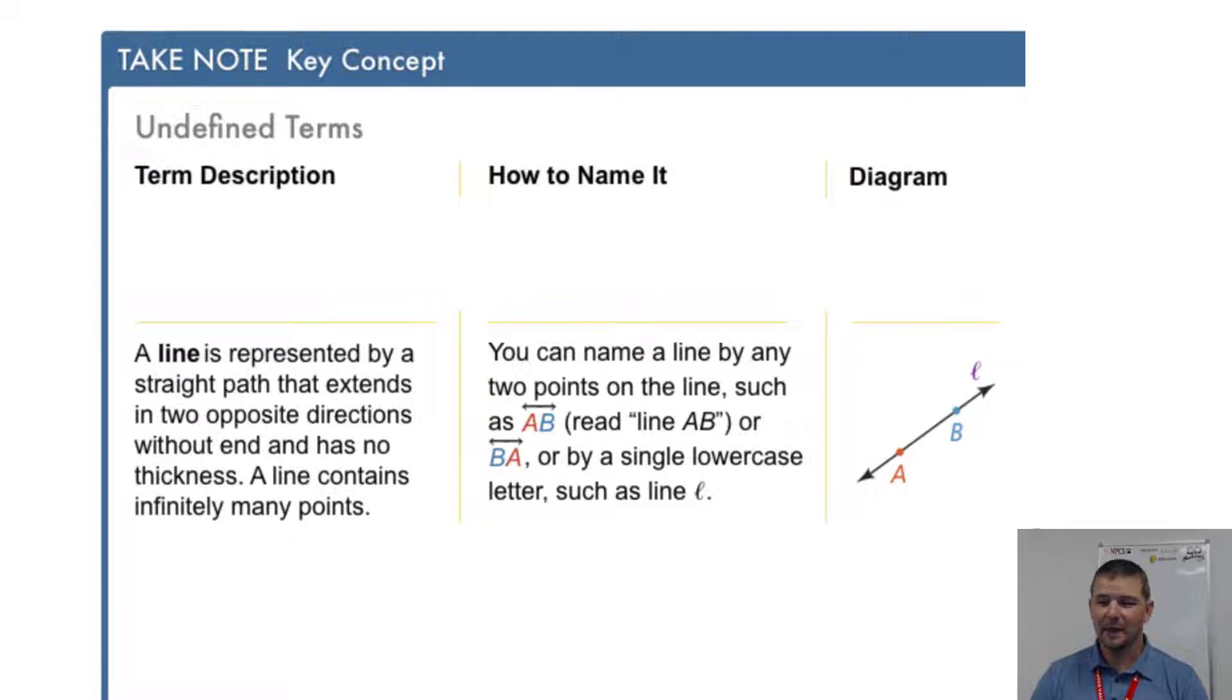A diagram: here we see line AB which could also be referred to as line BA and could be referred to as line L.